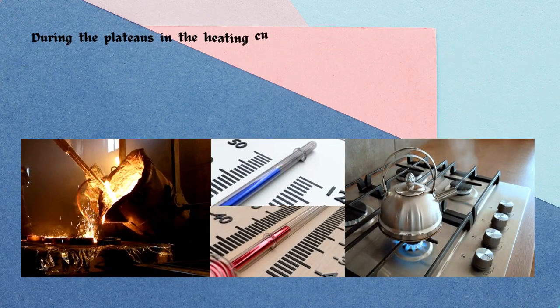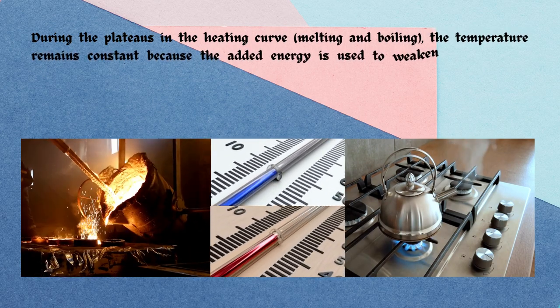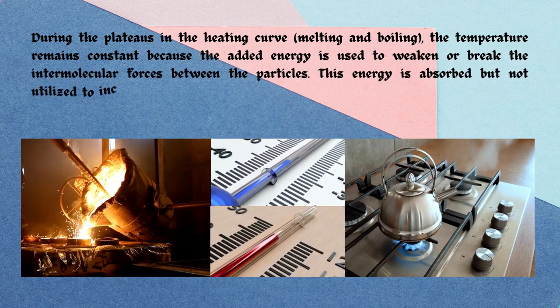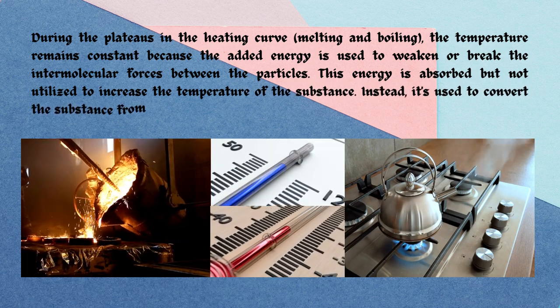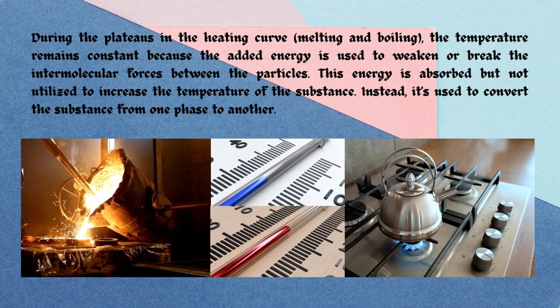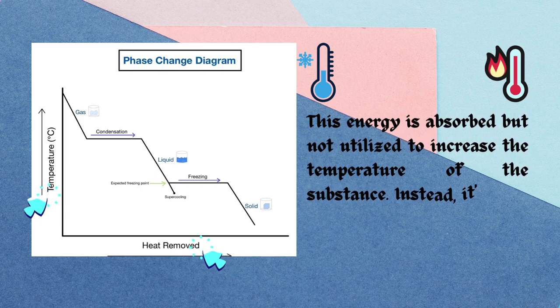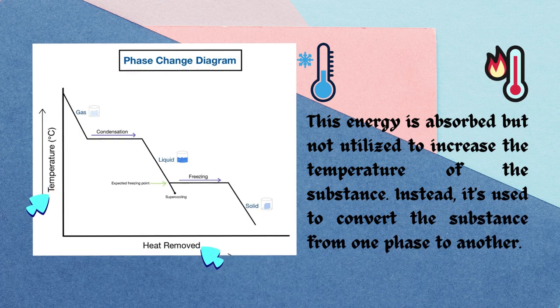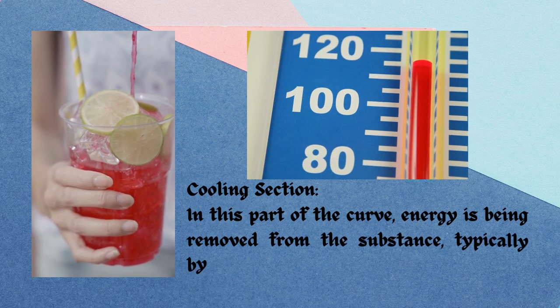During the plateaus in the heating curve — melting and boiling — the temperature remains constant because the added energy is used to weaken or break the intermolecular forces between particles. This energy is absorbed but not utilized to increase the temperature of the substance; instead, it is used to convert the substance from one phase to another.